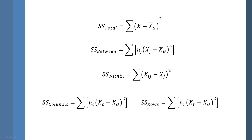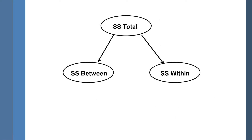Then there's a similar formula for the rows — it's really the identical formula, just with a different subscript. Take the mean of row 1, subtract the grand mean, square that deviation score, multiply by the number of people in that row, then move to the next row. Conceptually, the total variability in a one-way ANOVA is divided into the treatment effect (sum of squares between) and the non-treatment effect (sum of squares within), with between plus within equaling the total.